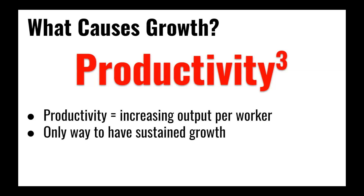Anytime you're able to produce more goods with the same amount of resources, you're seeing an increase in productivity and therefore an increase in long-run aggregate supply — an increase in full employment or potential output. Productivity is the only way to sustain economic growth. When you increase government spending, there's a short-term increase in output, but there's always a pull back to long-run equilibrium. With sustained actual economic growth driven by productivity, we'll see that long-run aggregate supply curve shifting to the right — and the economy keeps moving right rather than pulling back.